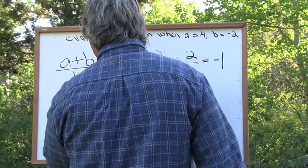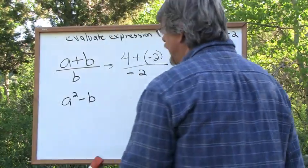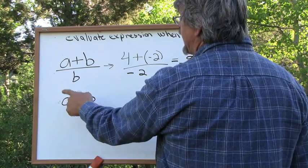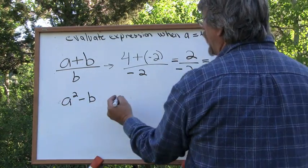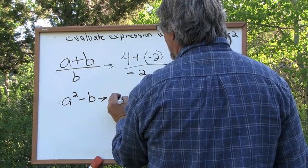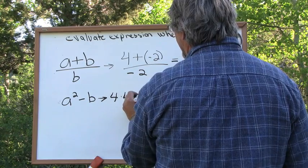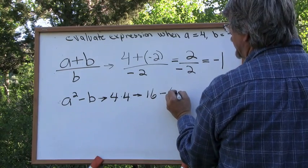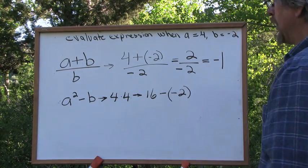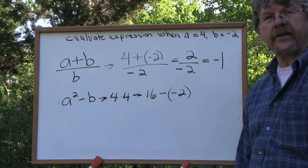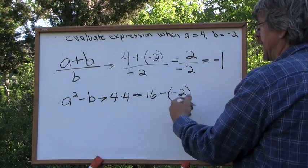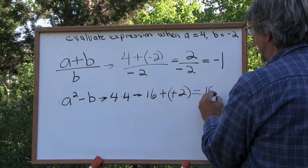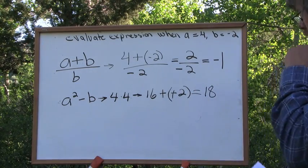What if we're given A squared minus B? We've done exponents — we know this is telling us A times A minus B. What is A? 4. So this becomes 4 times 4, which is 16, minus negative 2. Now here we have our double negative. The very best way to do a double negative is negate the negative. So this is 16 plus 2, which is 18. That's really not too tough to do.